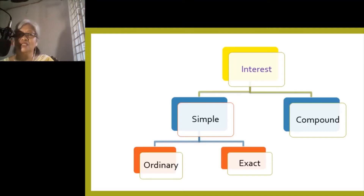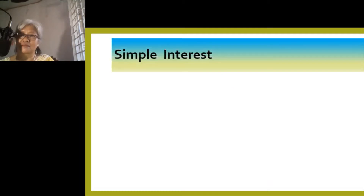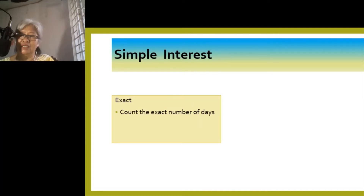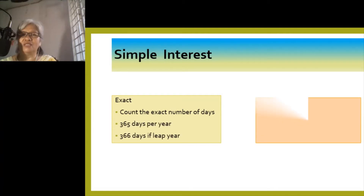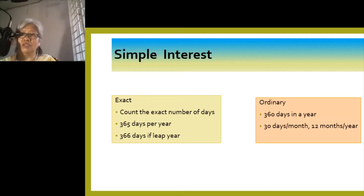Interest could be simple or compounded. For simple interest, it could be ordinary or exact. For exact interest, you count the exact number of days, considering 365 days per year, and 366 days if it is a leap year. For ordinary interest, it considers 360 days in a year — therefore 30 days per month or 12 months per year.